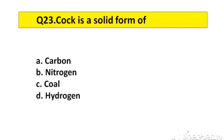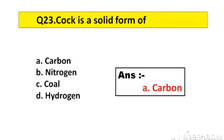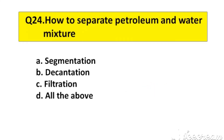Question number 23. Coke is a solid form of dash. Option A: Carbon, B: Nitrogen, C: Coal, D: Hydrogen. The right answer is option A: Carbon.